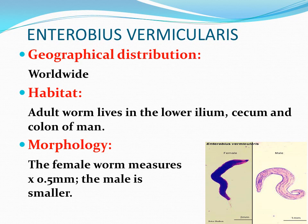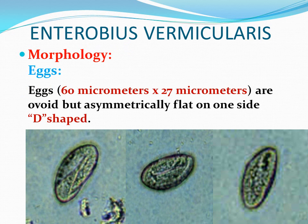Now we will discuss the last important intestinal nematode, Enterobius vermicularis, or the pinworm. The geographical distribution is worldwide. The adult worm lives in the lower ileum, cecum, and colon of man, and this infection is common in children under 12 years of age. The female worm is approximately 0.5 mm and the male is smaller compared to the female. The eggs are 60 by 27 micrometers, ovoid in shape but asymmetrically flat on one side, giving a characteristic D-shape morphology.